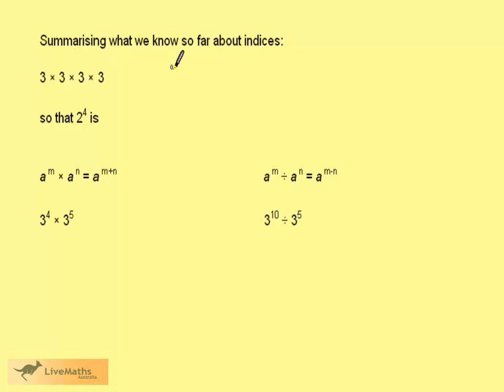Summarizing what we know so far about indices. If we have 3 times 3 times 3 times 3, that's four 3's in a row, we know that we can write this in shorthand notation as 3 to the power 4.